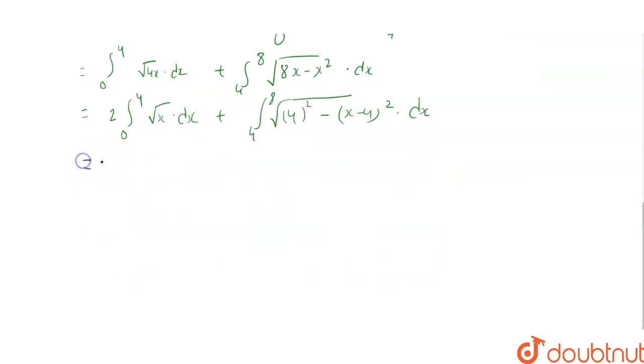This has simple integration of x to the power 3 by 2 upon 3 by 2, that becomes 2 by 3, limit 0 to 4. And here, we will apply a formula, that is, integral of under root a squared minus x squared equals x by 2 under root a squared minus x squared, plus a squared by 2 sin inverse x by a. We will apply this formula in this. Okay, we can easily find the integral.